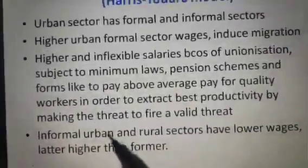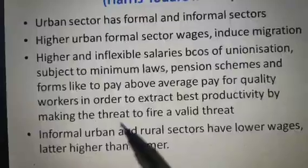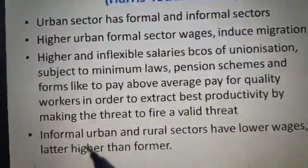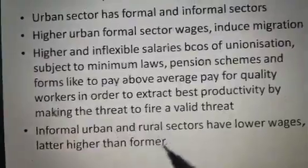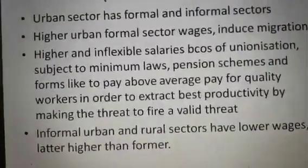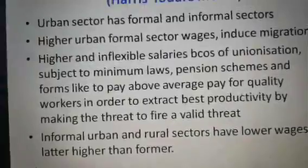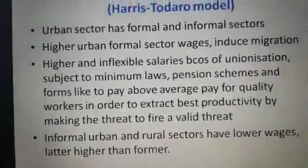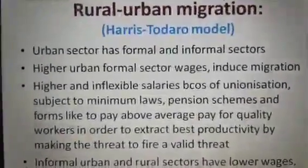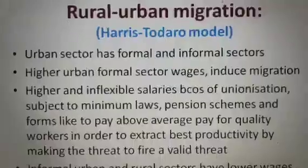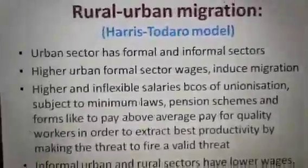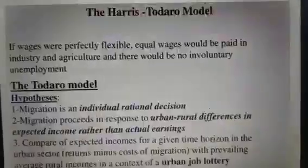Importantly, the informal urban and rural sectors have lower wages, with the rural sector's wages being higher than the urban informal sector's wages. This is how the Harris-Todaro model of migration works, based on rural-urban migration.